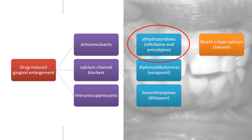Gingival enlargement is one of the side effects associated with administration of certain drugs. Drugs that can induce gingival overgrowth can be divided into three categories: anticonvulsants, calcium channel blockers, and immunosuppressants. Today we're going to focus more on calcium channel blockers, which are often used as antihypertensive drugs, therefore increasing the number of gingival enlargement cases in hypertensive patients.